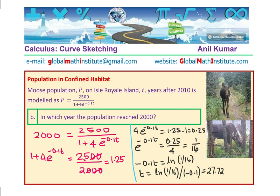So after approximately 27.72 years, the population reached 2000 — meaning on the 28th year. Since we started in 2010, we add 28 years: 2010 + 28 = 2038. So in the year 2038, the population will reach 2000 as per these calculations. These critical points will also help us sketch the graph later.